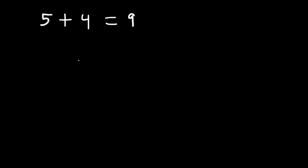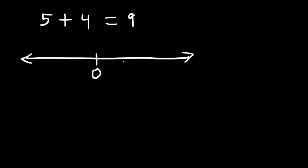Let's begin with the basics. How can we add two numbers? Let's start with something simple: 5 plus 4. Now you know 5 plus 4 is 9. You can type it in the calculator, but if you want to get the answer mentally, picture where 5 is located on a number line.